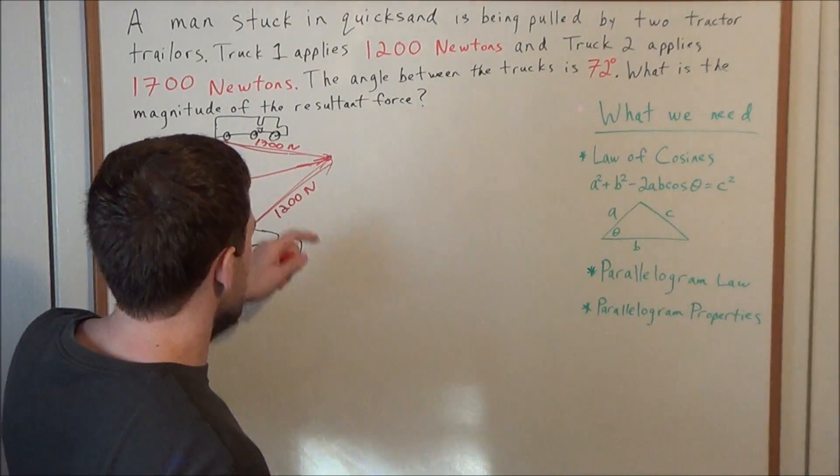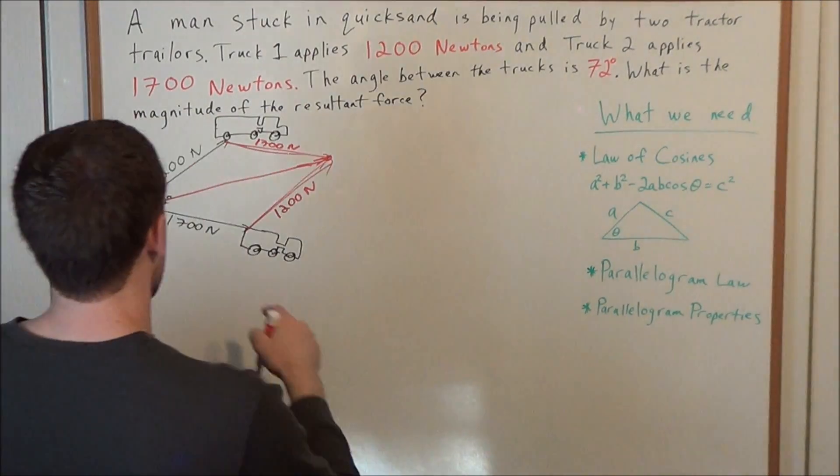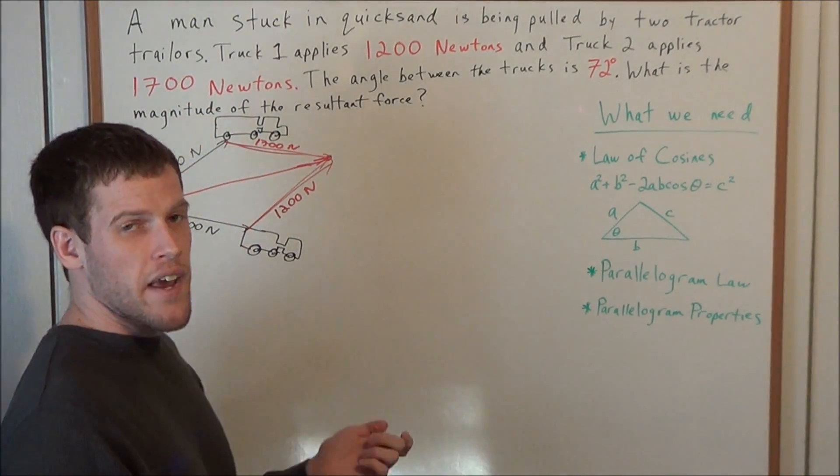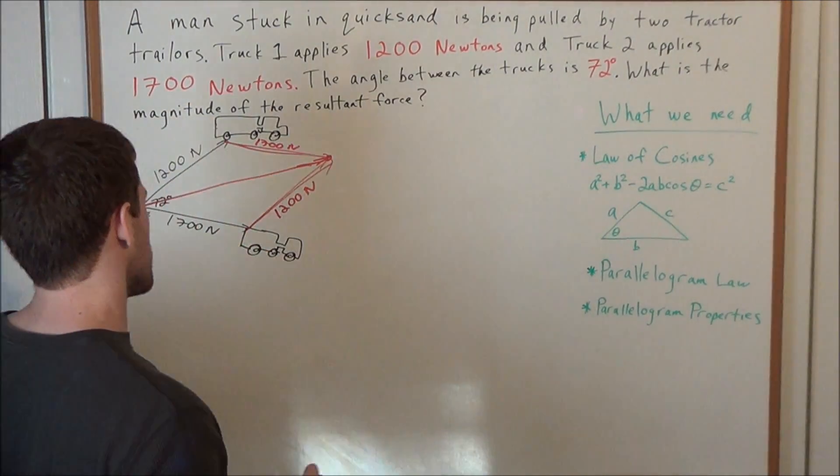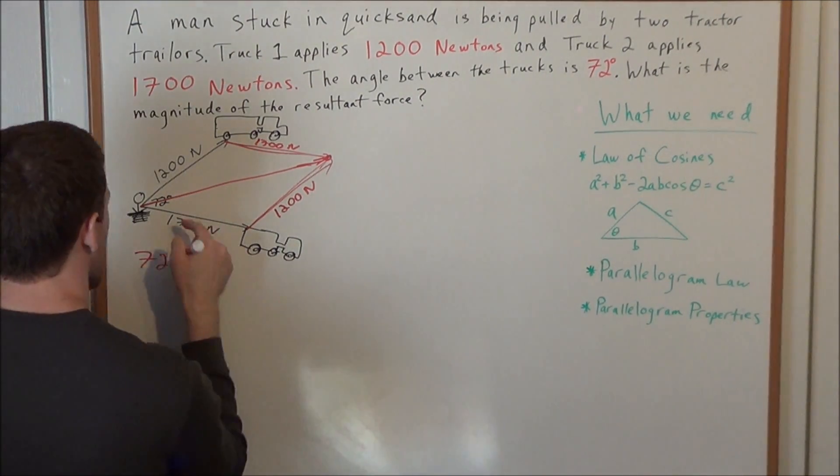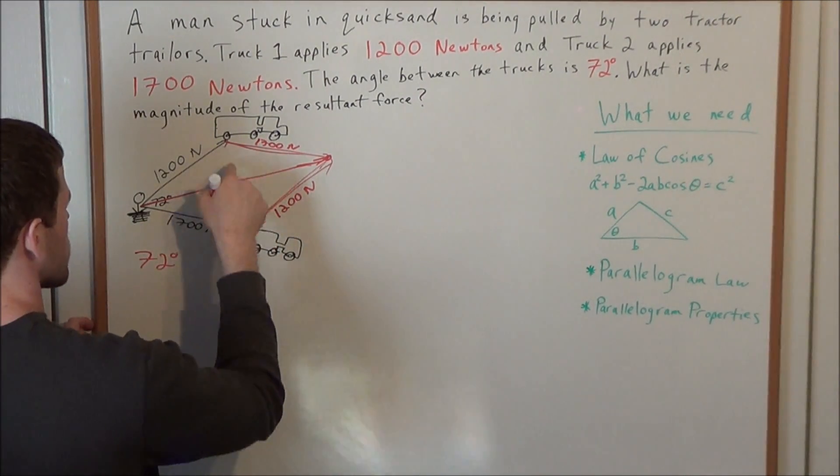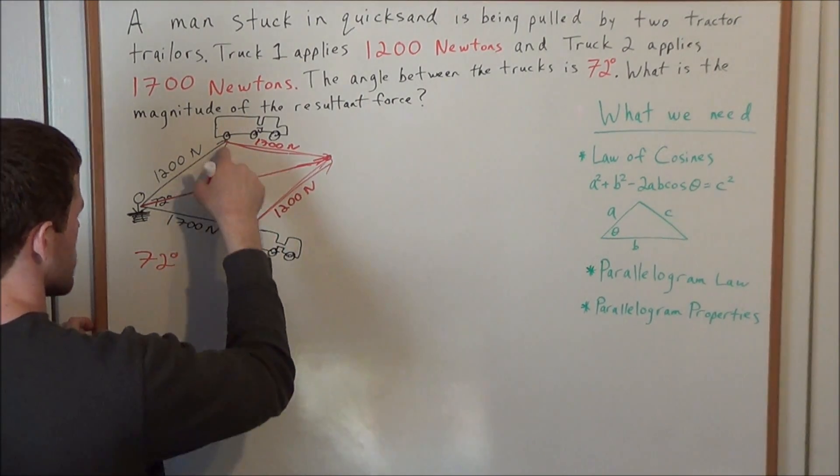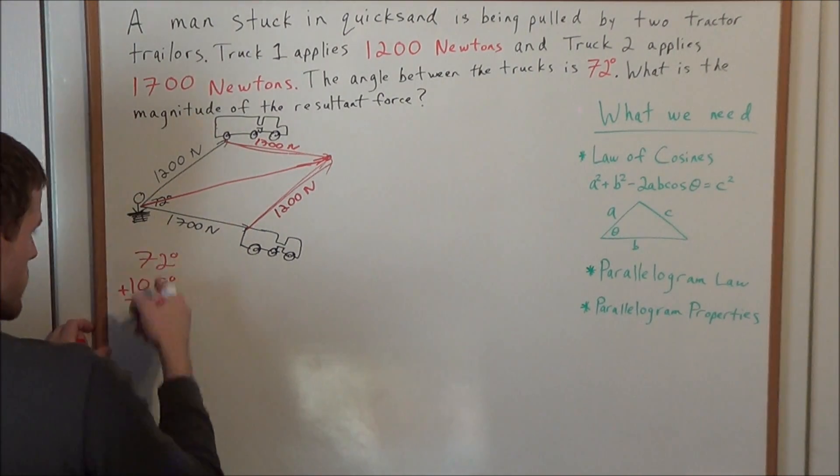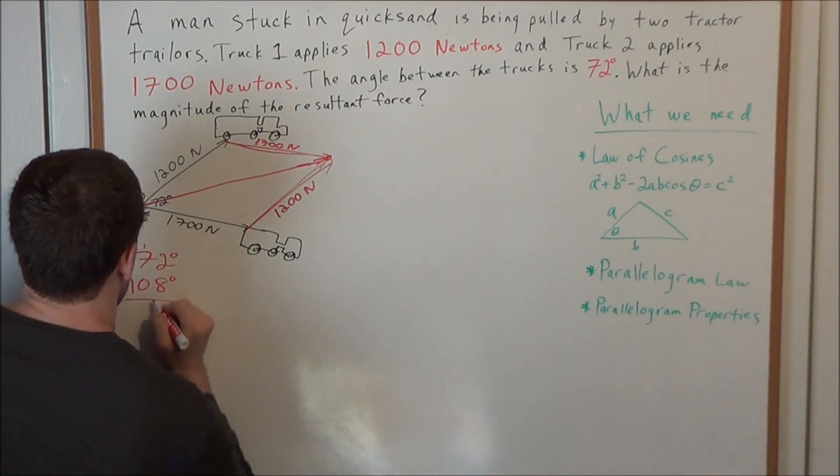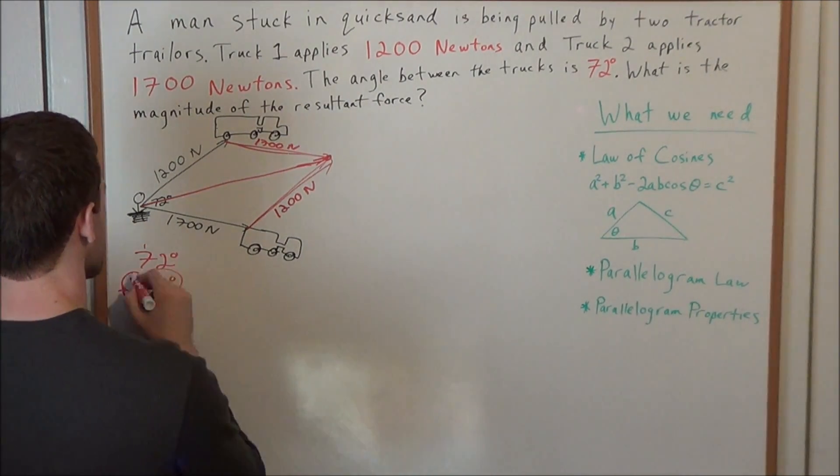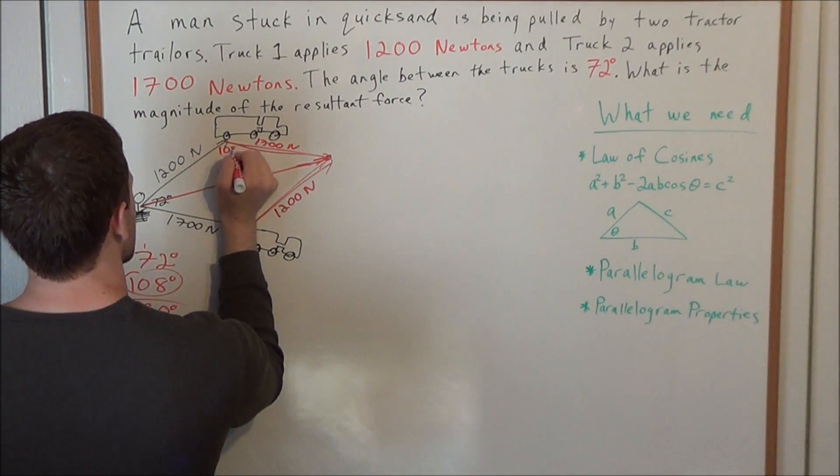But now the property of parallelograms tells us, well, we have this 72 degree angle here, but consecutive angles in a parallelogram must sum to 180 degrees. So if we have 72 degrees at this angle here, one of the angles at these two points here would have to be 108 degrees. Keeping in mind that if we sum those together, this brings us to 180 degrees. So this missing angle is 108 degrees, and this missing angle here is also 108 degrees.